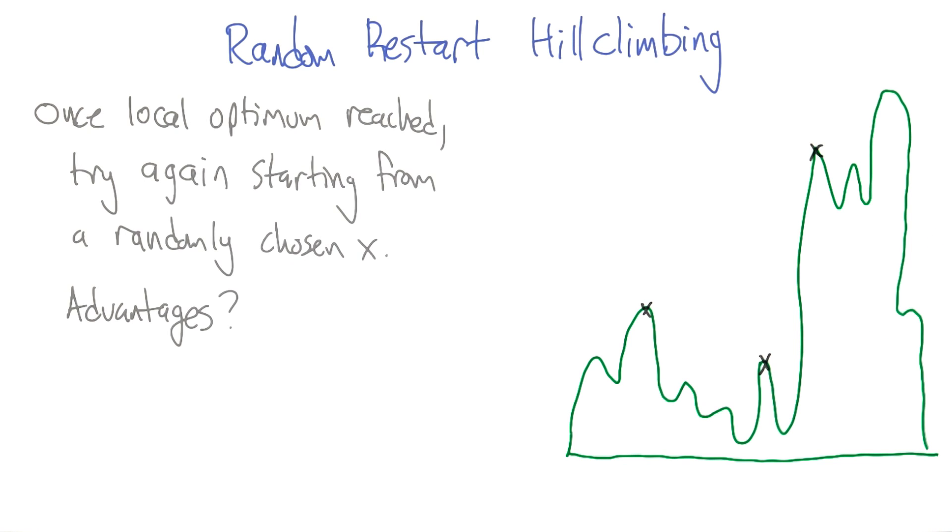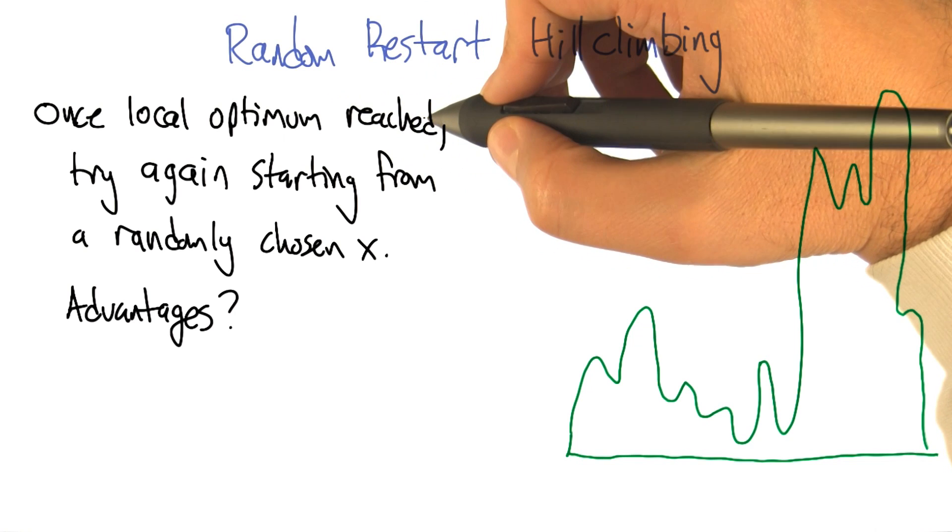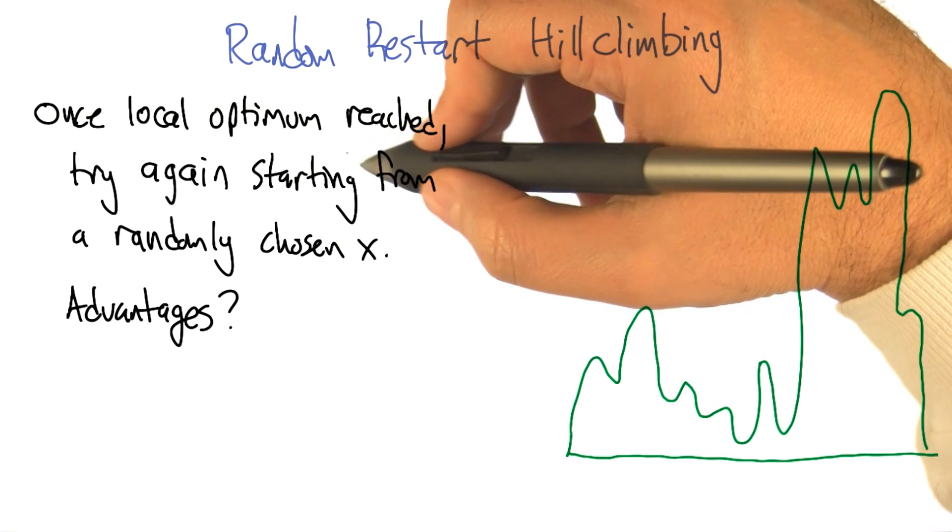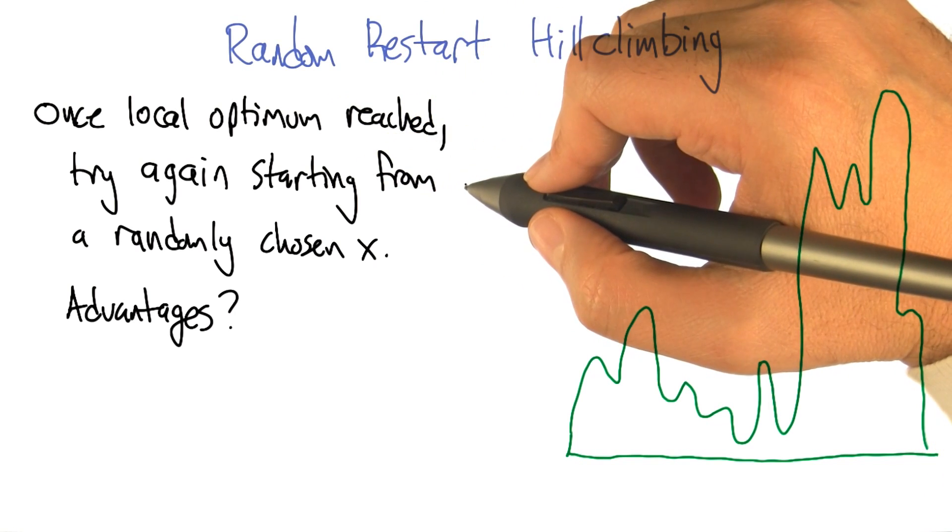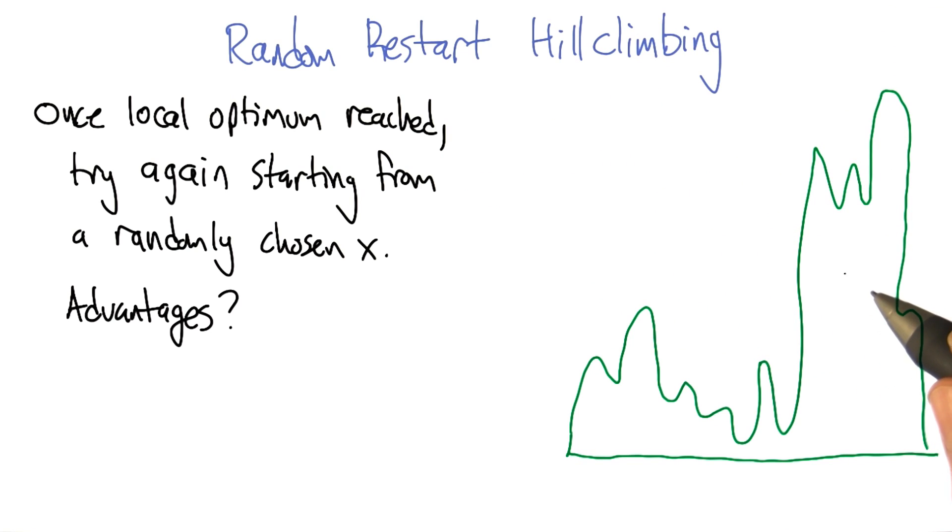What randomized hill climb is going to do is once a local optimum is reached, we're just going to start the whole thing again from some other randomly chosen x. It's sort of what you do if you were trying to solve a problem and you got stuck. You're like, okay, let me just try to solve it again.